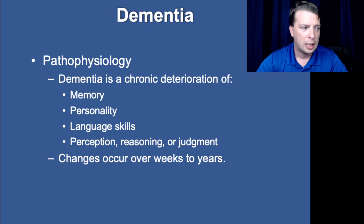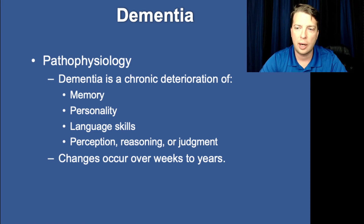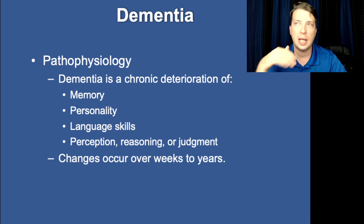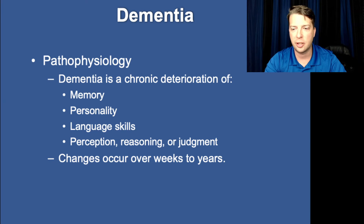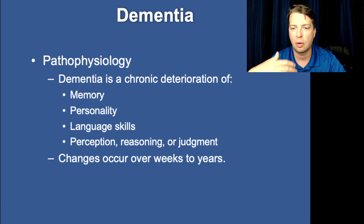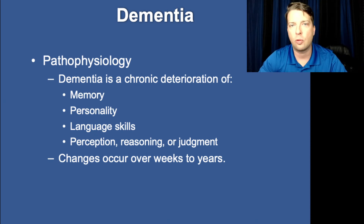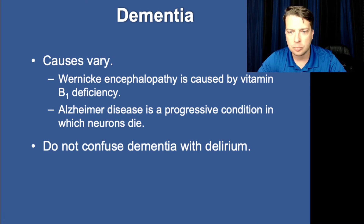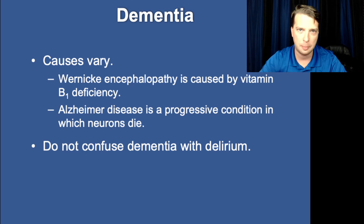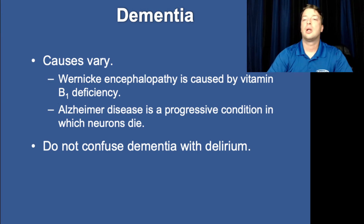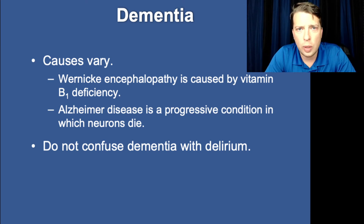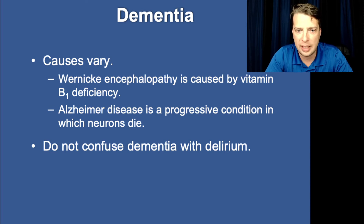Dementia is an umbrella diagnosis differentiated from other forms of confusion and delirium because it is chronic. It involves a chronic deterioration resulting in loss of identity, self-awareness, memory, or a change of personality and loss of judgment — developing over weeks to years. Multiple diseases fall under this umbrella. The two most common are Wernicke's encephalopathy, related to vitamin B1, and Alzheimer's. Encephalopathy refers to a swelling of brain tissue — fluid shifts into the neurons, the neurons swell, lose function, and there's an alteration in mental status.